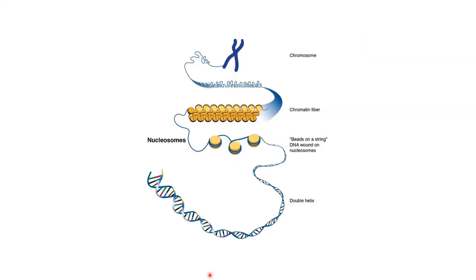Summarizing one last time: the double-stranded DNA molecule winds around histone proteins to form nucleosomes. Many nucleosomes stack together to form fibers known as chromatin. The chromatin fibers then tightly coil and condense together to form the chromosomes.